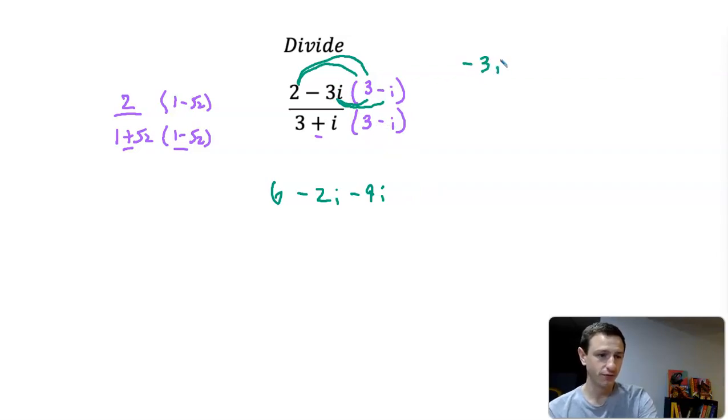I'm going to write this off to the side because this gets pretty wild. Negative 3i times negative i—the coefficient is negative 3 times negative 1, so that's positive 3. Then we have i times i—what is i times i? I times i is i squared, and i squared is negative 1. So negative 3i times negative i is 3 times negative 1, which is negative 3.